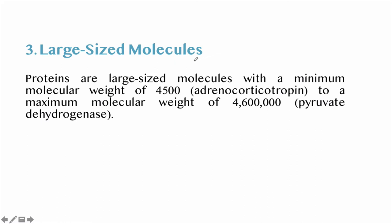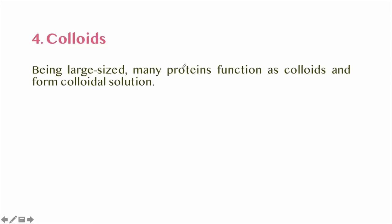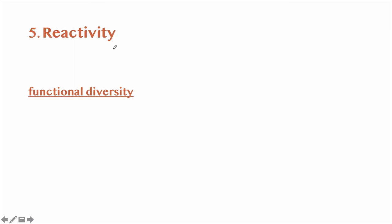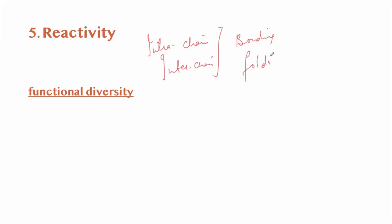Proteins are large-size molecules with a minimum molecular weight of adrenocorticotropin up to a maximum molecular weight of pyruvate dehydrogenase. Being large-sized, many proteins function as colloids — they form a colloidal solution. Because of intrachain and interchain bonding and folding, a protein has a particular specific configuration with specific reactive groups, providing functional diversity for performing different cellular activities.